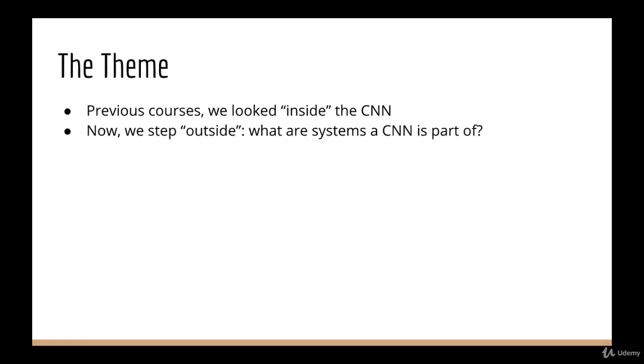So the main theme of this course is that in previous courses, we looked at what goes inside the neural network, specifically CNNs. In this course, we take one step outward. Now we are outside the neural network, we want to ask, what can we do with these CNNs? What systems can contain neural networks, and how can we use our knowledge about neural networks to make them better? Thanks for listening, and I'll see you in the next lecture.